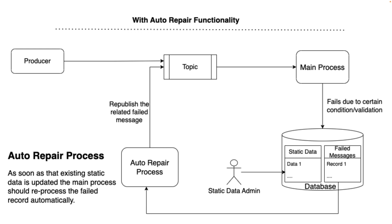This is where we are discussing the auto repair functionality. The producer produced a message, the main process validated it, and it failed — so certain messages ended up in the failed messages table. With the auto repair functionality, what we are trying to achieve is that as soon as the static data admin updates the static data, the process should try to reprocess those failed messages automatically without any human intervention.